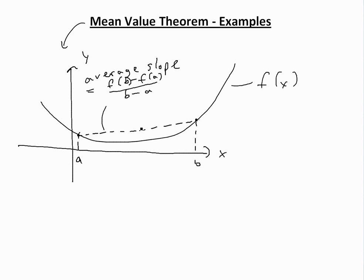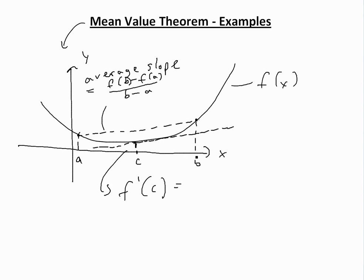The mean value theorem says that if you have a function differentiable on an interval, then the average slope — the mean — means you'll have a number c that's in between a and b, such that the derivative at f(c) is parallel to the average slope. So f prime of c equals f(b) minus f(a) over b minus a.